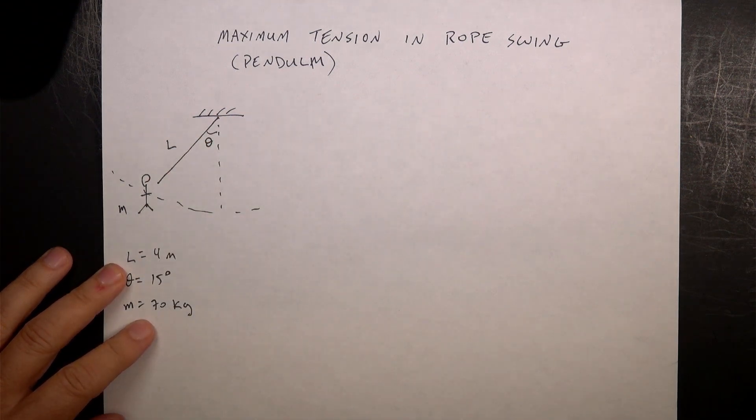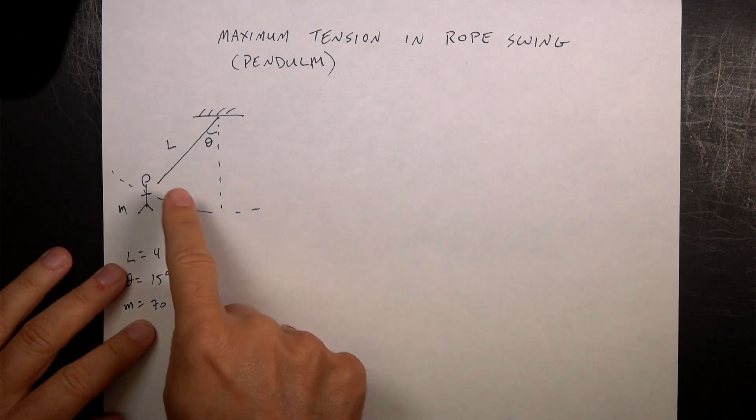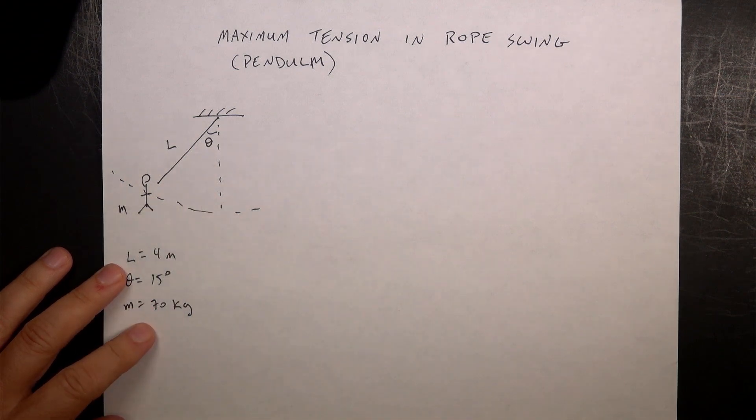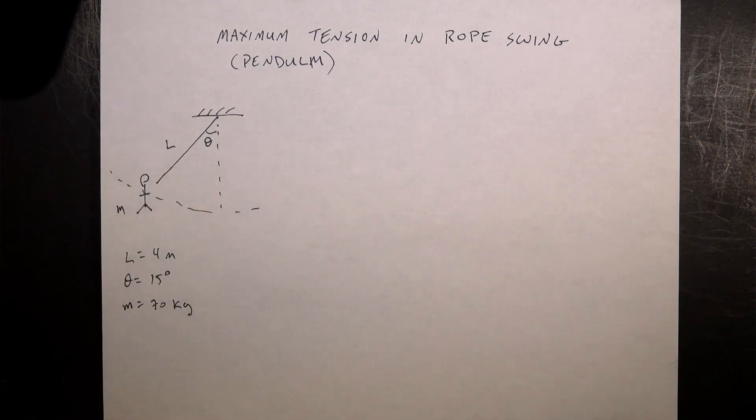I like that problem. I like it also because you could replace the person with just a mass swinging - it's a pendulum, or it could be Tarzan, it could be Spider-Man. So we have a lot of different options. And a lot of people actually have done these rope swings where it's tied to a tree and you swing out over some water and you let go.